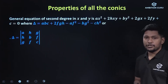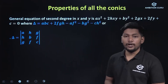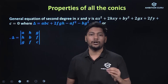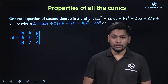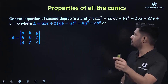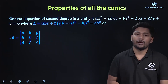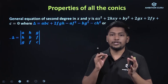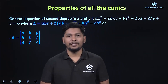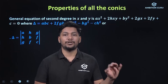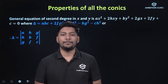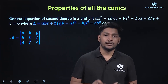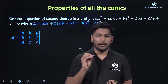I am studying the properties of all conics, starting with the general equation of second degree in x and y. That is: ax² + 2hxy + by² + 2gx + 2fy + c = 0. This is the general equation of second degree.